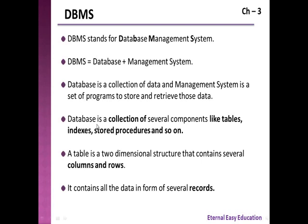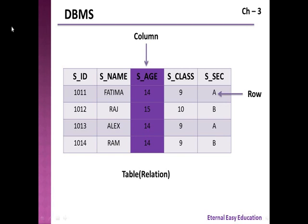A database is a collection of several components like tables, indexes, stored procedures, and so on. A table is a two-dimensional structure that contains several columns and rows, holding all data in the form of records. For example, a student table has columns: student ID, student name, student age, student class, and student section — five columns and four rows. This structure is called a table or a relation. Simply put, a database is a collection of tables.